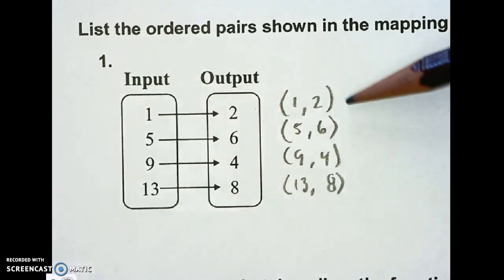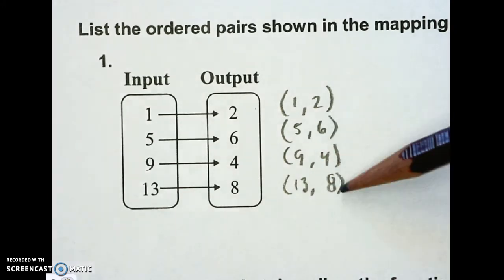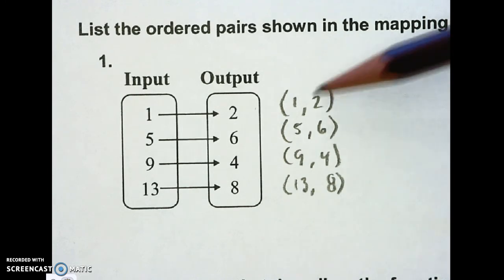I don't know why, but most people lately have been leaving their parentheses off their coordinate pair. You need these parentheses around the coordinate pairs. Otherwise, it's not a coordinate pair.